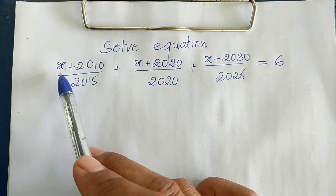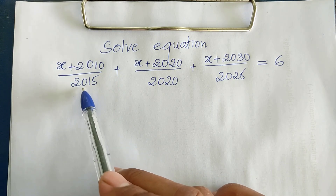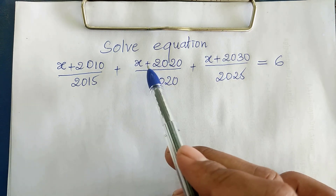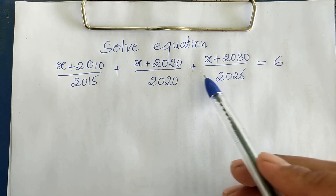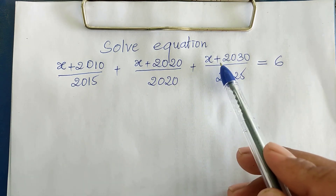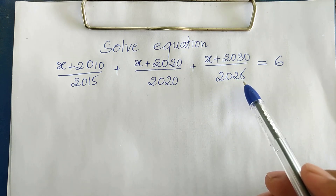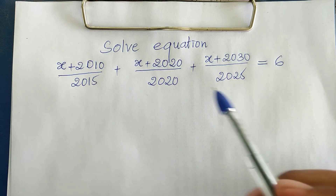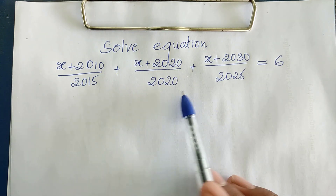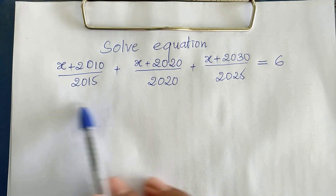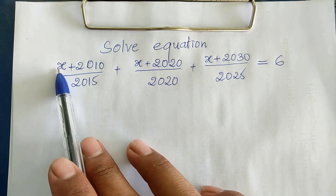So, the equation is: (h + 2016 + 10) divided by (2016 + 15), plus (h + 2016 + 12) divided by (2016 + 12), plus (h + 2016 + 30) divided by (2016 + 25) equals 6. Hey, hello everyone. Welcome to my YouTube channel. Today I have one insight like this, and this is a first-degree equation.